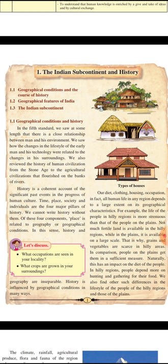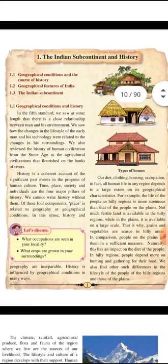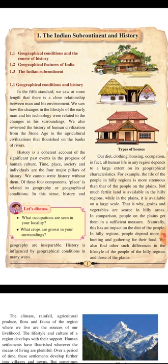Let's discuss: what occupations are seen in our locality? In Belapur, there is a big fish market — most probably you will see a fisher lady's colony. People go for fishing and bring fresh fish to sell. Belapur was first a village and now has become a city. People used to grow crops and the main staple food was rice, because in Konkan plenty of water and heavy rains are available, making rice a suitable crop. History is influenced by geographical conditions in many ways.